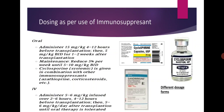Dosing as an immunosuppressant: For oral administration, give 15 mg/kg 4 to 12 hours before transplantation, then 5 mg/kg twice a day for 1 to 2 weeks after transplantation. For maintenance, reduce by 5% per week until reaching 5 to 10 mg twice a day. Systemic cyclosporine is given in combination with other immunosuppressants, generally azathioprine and corticosteroids. For IV administration, infuse 5 to 6 mg over 2 to 6 hours, 4 to 12 hours before transplantation, then 5 to 6 mg per day until oral therapy is tolerated.